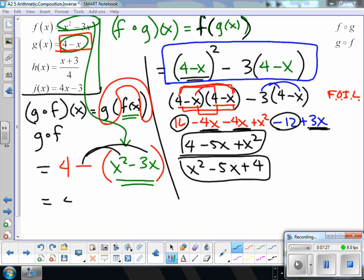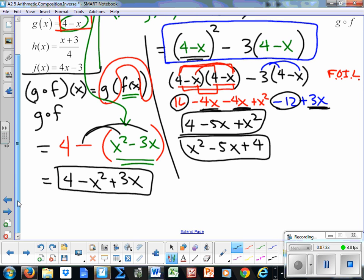Now the only thing to really simplify here is I have a minus a quantity, so I can distribute that little negative guy there. So 4 minus x squared plus 3x. And this can be done. A lot of people like to have the x squared first. This is the answer for g of f.